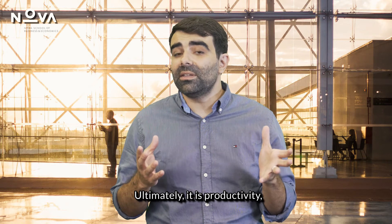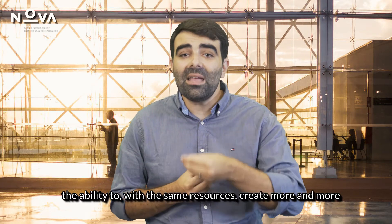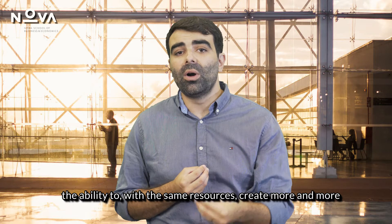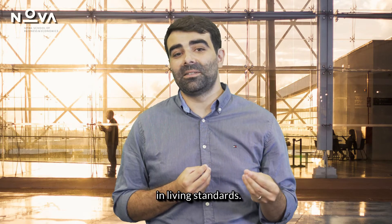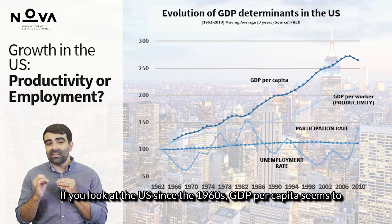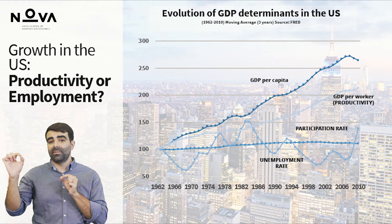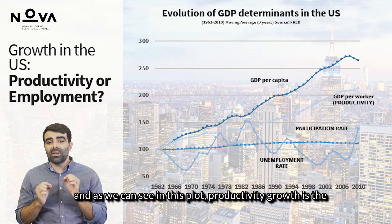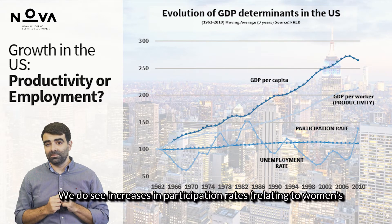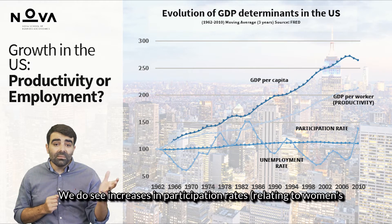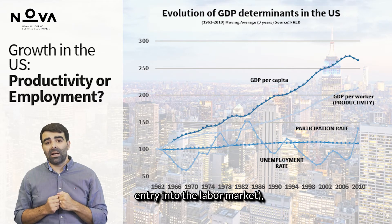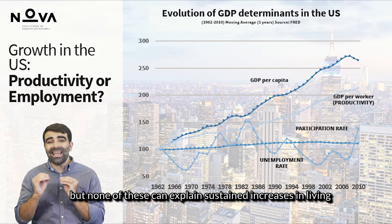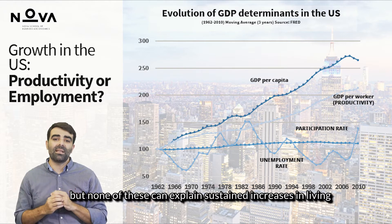Ultimately, it is productivity — the ability to, with the same resources, create more and more wealth — that has been the main driver of secular increases in living standards. If we look at the US since the 1960s, GDP per capita seems to grow along a stable growth path. And as we can see in this plot, productivity growth is the main source of GDP growth. We do see increases in participation rates relating to women's entry into the labor market, but none of these can explain sustained increases in living standards through time.